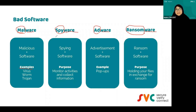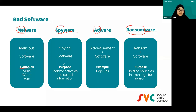Next, spyware — in the name itself, its purpose is to spy on us. It's a spying software whose purpose is to monitor our activities and collect our information. For example, if we go online shopping and it requires our credit card, spyware can copy our credit card number. As for adware, it's an advertisement software — example is pop-ups, which is common on our devices these days.